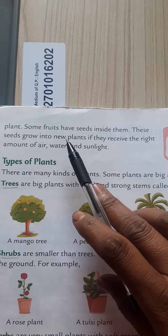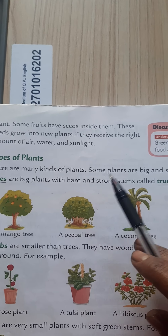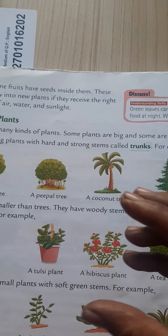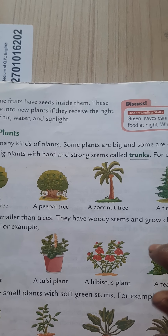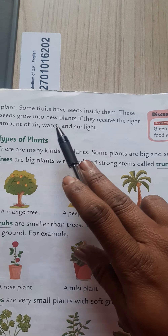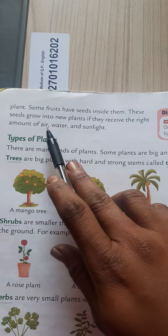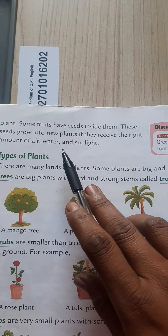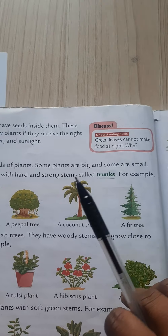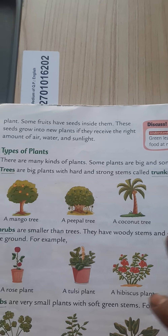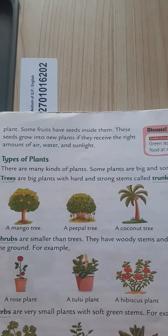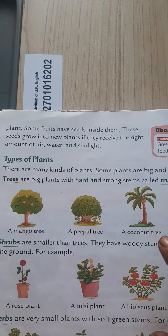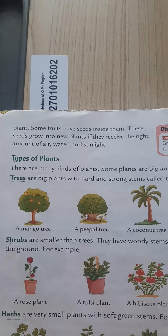These seeds grow into new plants. After eating a mango, when it is ripe and yellow, you can take that seed and put it into the ground and you will get a new plant. These seeds grow into new plants if they receive the right amount of water, air, and sunlight. When you put the seed into the ground, it should get the proper amount of water and sunlight, and then it grows into a new plant.